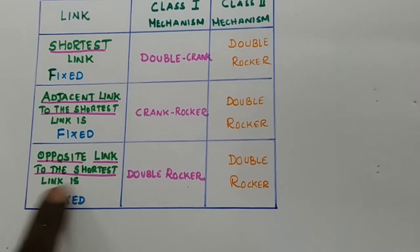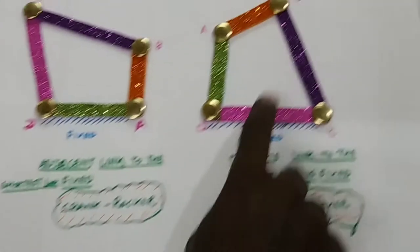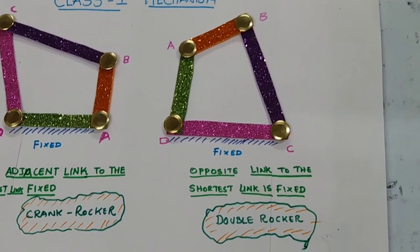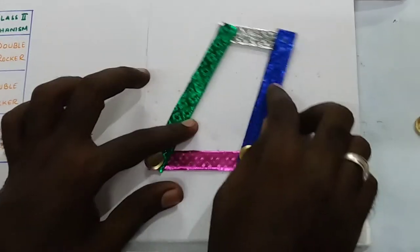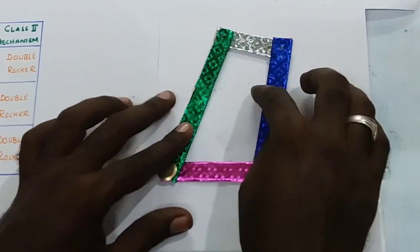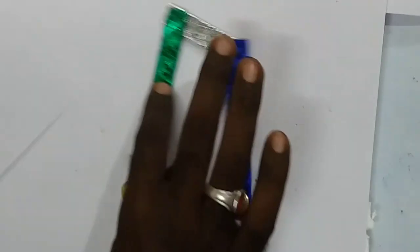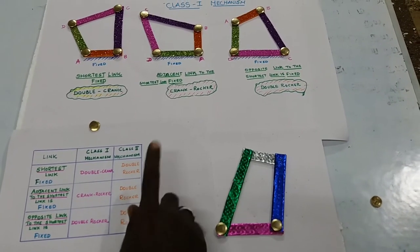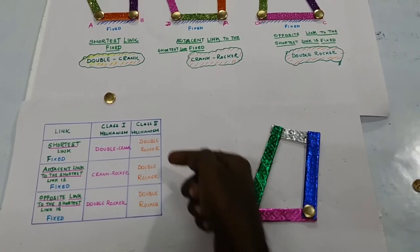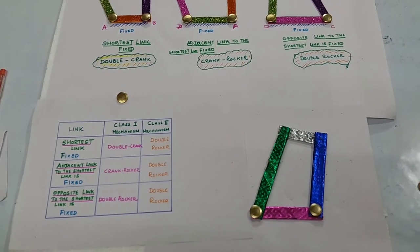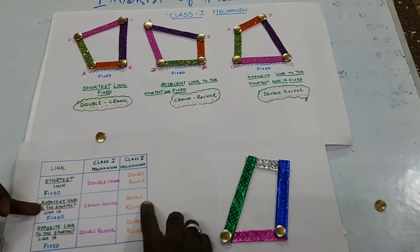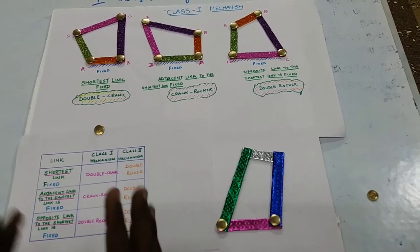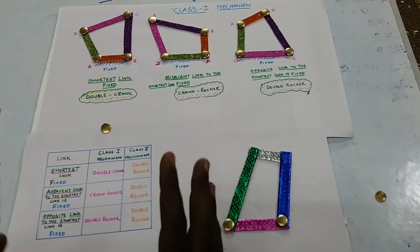Next, opposite link to the shortest link is fixed, and we can get a double rocker mechanism. For class 2 mechanism, fixing any link — shortest link, adjacent link, or opposite link to the shortest link — all give a double rocker mechanism. Inversions means different mechanisms obtained by fixing different links of a kinematic chain.